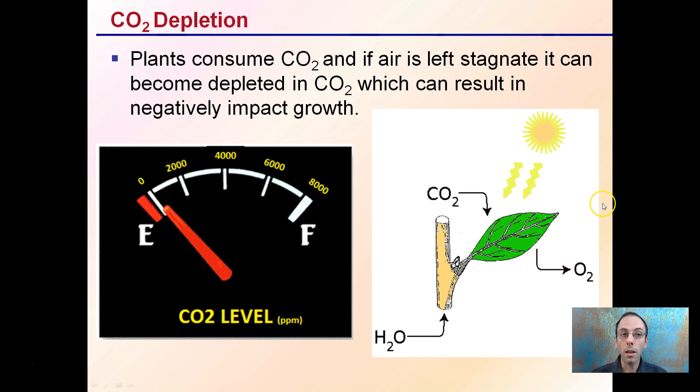Carbon dioxide depletion can occur because plants consume CO2. If air is left stagnant, it can become depleted in carbon dioxide, negatively impacting growth. Remember, the carbon is used for sugar production, which helps the plant grow, maintain itself, and allows the roots to do respiration. We want to make sure we're not depleting our CO2, which can occur if air is stagnant.